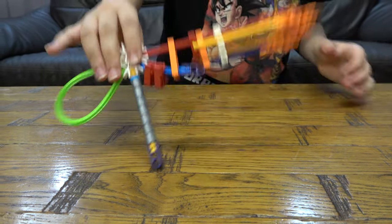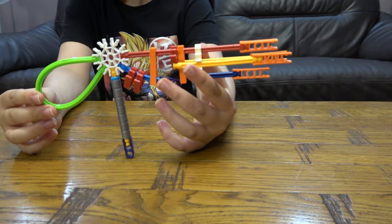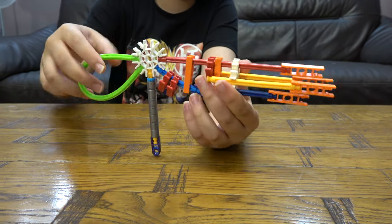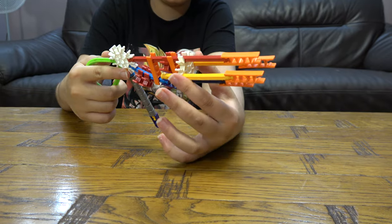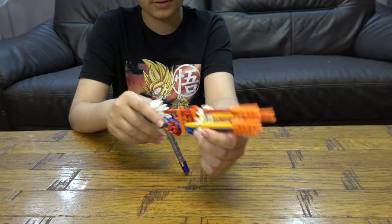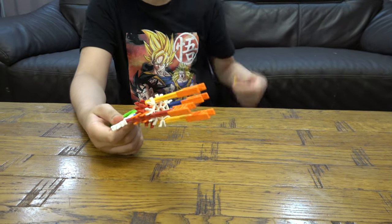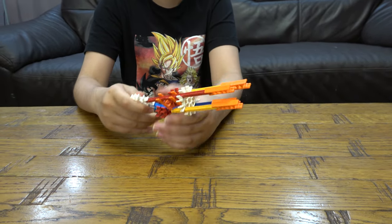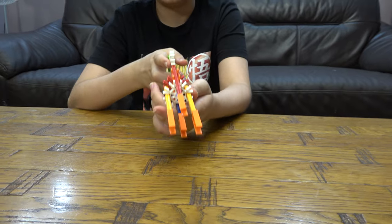Like so. Here we have our finished Knex shotgun. So as you can see here, you can do like this. When you reload, you do this and you take this off, reload, put it back, then you can do it again.